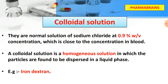Next is our colloidal solution. An example is the normal solution of sodium chloride at 0.9% weight by volume, which is close to the concentration of sodium chloride found in the blood.